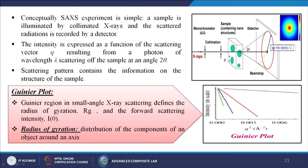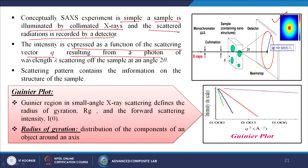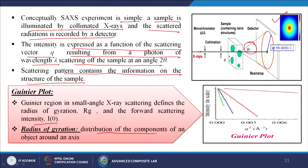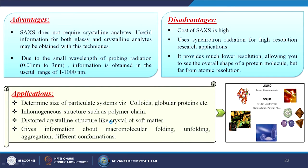Conceptually, the SAXS experiment is simple: a sample is illuminated by collimated X-rays and scattered radiation is recorded by a detector. Monochromatic X-rays pass through a sample containing nanostructures and reach the detector. The intensity is expressed as a function of the scattering vector q, resulting from a photon of wavelength lambda scattering from the sample at angle 2θ. The scattering pattern contains information on the structure of the sample. In the Guinier region, small angle X-ray scattering defines the radius of gyration Rg and the forward scattering intensity I0; the radius of gyration describes the distribution of components of an object around an axis.